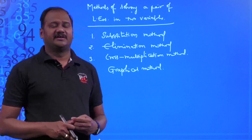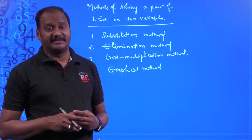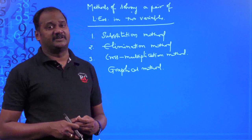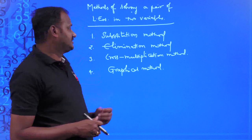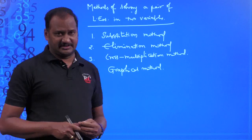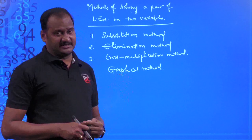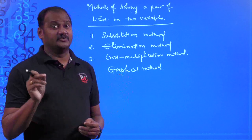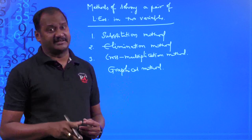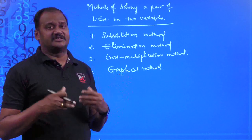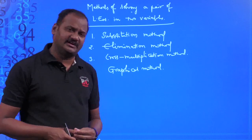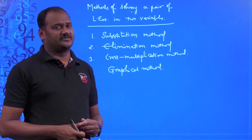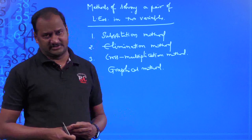For example, you are given a pair of linear equations — how are you going to solve them by substitution method, by elimination method, by cross-multiplication method, if a unique solution exists? If a unique solution does not exist, then there are infinitely many solutions, or otherwise there is no solution, and in that case we are not going to find those solutions.